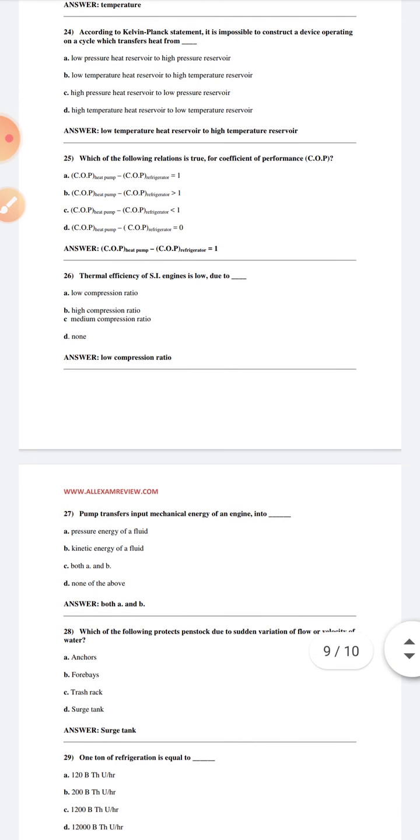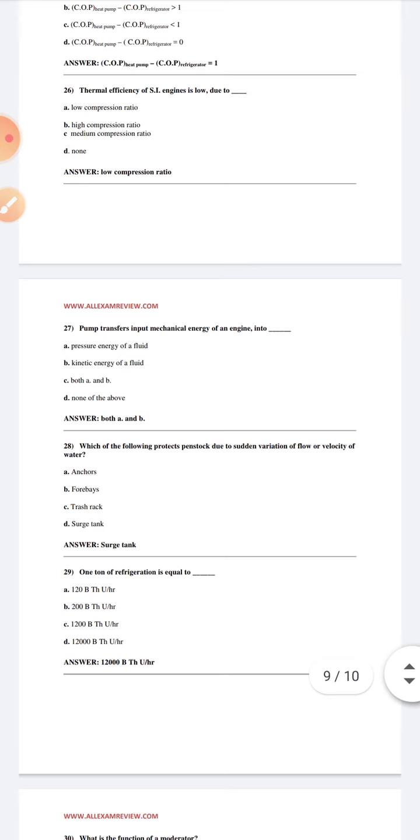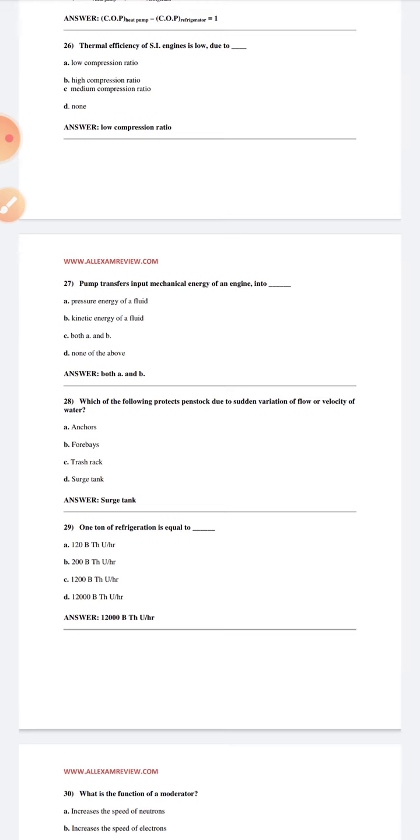Pump transfers input energy of an engine into pressure energy of a fluid or kinetic energy of a fluid. Which of the following protects the system and strokes due to sudden variation of flow or velocity of water? Surge tank. One ton of refrigeration is equal to 12,000 BTU per hour.